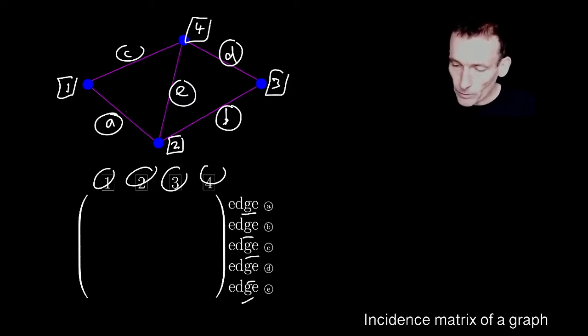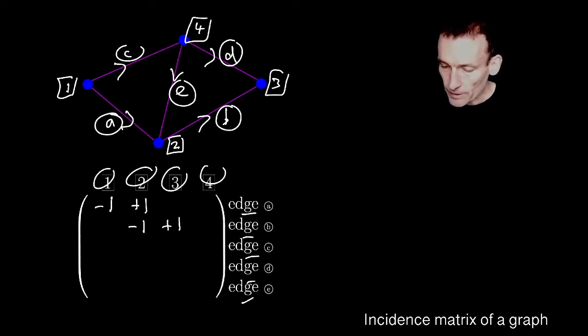And then what I did was I go to each edge. So let's go to edge A. And by the way, I also put these arrows on the edges. Those were up to me. Now I went to edge A and because it left node one and went into node two, I did that. I went to edge B and because it comes out of node two and goes into node three, I put that. And then I went to edge C, it comes out of node one and goes into node four. Edge D comes out of edge four and goes into node three. And finally edge E comes out of node four and into node two.